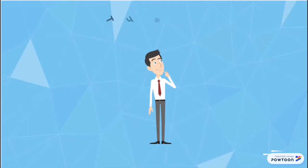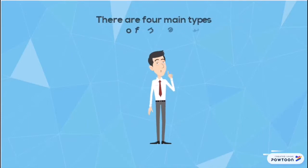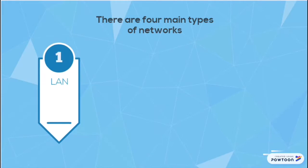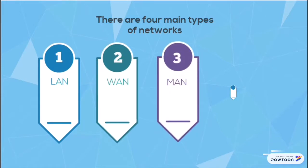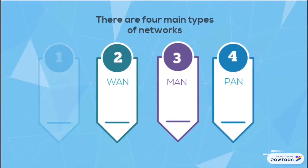So what are the types of networks? There are four main types of networks: LAN, local area network; WAN, wide area network; MAN, metropolitan area network; and PAN, personal area network.